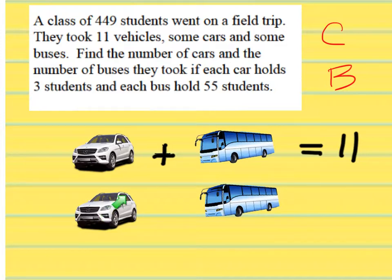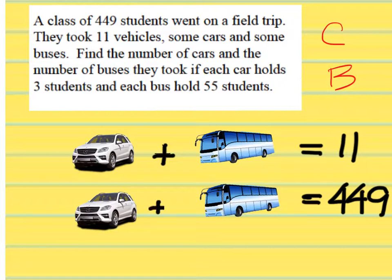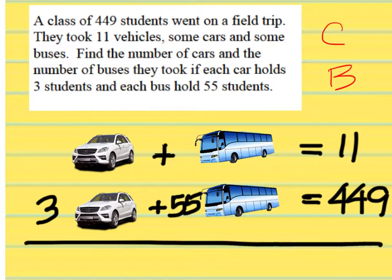Each car holds 3 students and the bus holds 55 students. How many did they take on the trip altogether? 449. So we know there is going to have to be a 449 at the end. What operation would I do if I were combining all the people that went in a car and all the people that went in a bus? Add. So 3 times the number of cars gives how many students went in a car. Each car holds 3 and each bus holds 55, giving us our second equation.